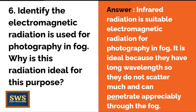Identify the electromagnetic radiation used for photography in fog. Why is this radiation ideal for this purpose? Infrared radiation is the suitable electromagnetic radiation for photography in foggy conditions. It is ideal because it has a long wavelength, so it does not scatter much and can penetrate appreciably through the fog.